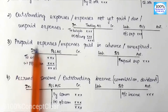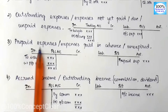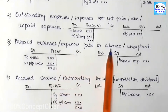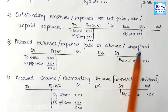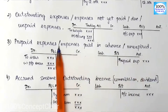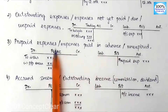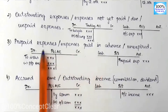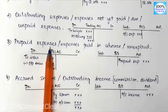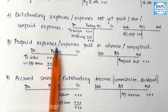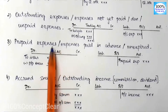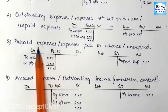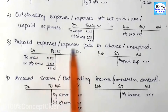The next adjustment is prepaid expenses — expenses paid in advance that are unexpired. We will treat these as prepaid expenses. For example, prepaid rent or prepaid insurance — the amount paid in advance for next year.